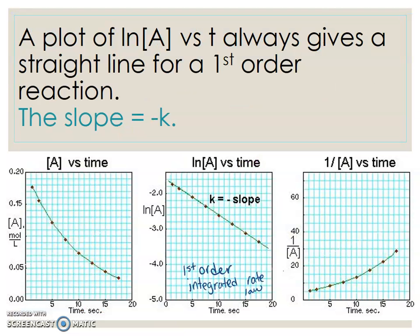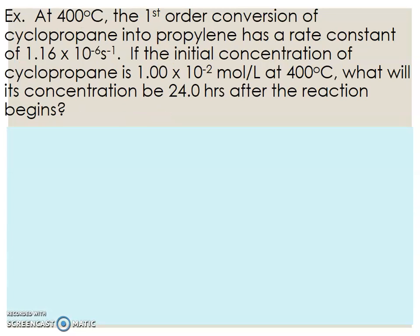A plot of the natural log of the concentration versus t always gives a straight line for the first order reaction, and this gives us a negative slope. This is what you will work with primarily. Now I told you that there is zeroth order and second order for the integrated rate law, and sometimes you have to identify those graphs as well. But in my opinion, I doubt that those are going to be questions on this year's AP exam.